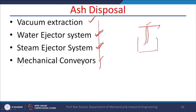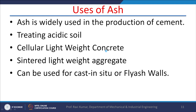Mechanical conveyors can also be used for ash disposal, but their initial cost is high, there is a limitation on distance, and maintenance of conveyors is also required.